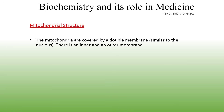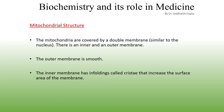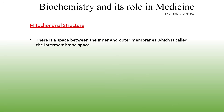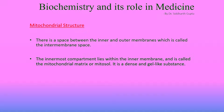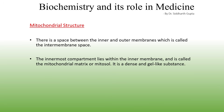Besides the nucleus, the mitochondrion is the only organelle covered by a double membrane — it has an inner and an outer membrane. While the outer membrane is smooth, the inner membrane has infoldings called cristae that increase its surface area. The space between the inner and outer membranes is called the intermembrane space, and the innermost compartment — called the mitosol or mitochondrial matrix — is a gel-like substance enclosed by the inner mitochondrial membrane.